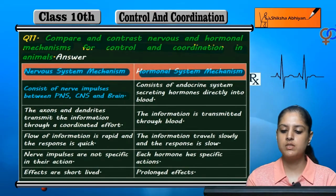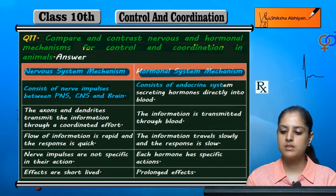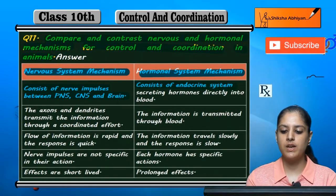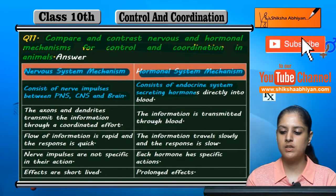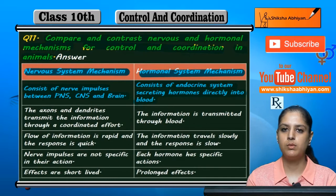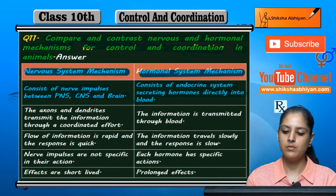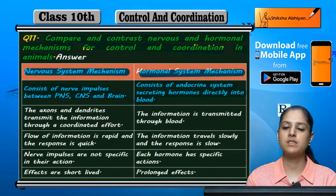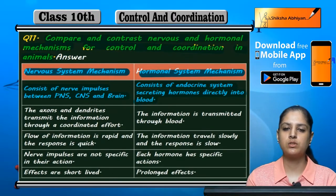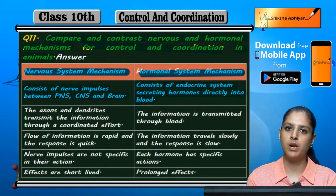The hormonal system consists of the endocrine system secreting hormones directly into the blood.